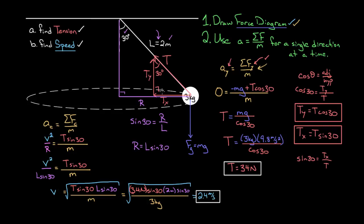To recap: when solving a sophisticated centripetal force problem, draw a quality force diagram, then use Newton's second law for a single direction and only plug forces in that direction into the net force. If your chosen direction lies along the centripetal direction — pointing toward the center of the circle — use V squared over R for centripetal acceleration. Make sure R refers to the radius of the circle the object is actually traveling in, not the length of the string.